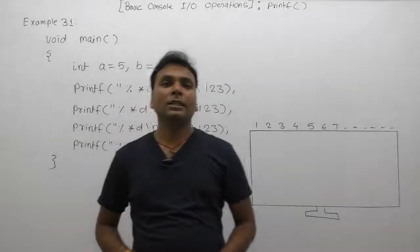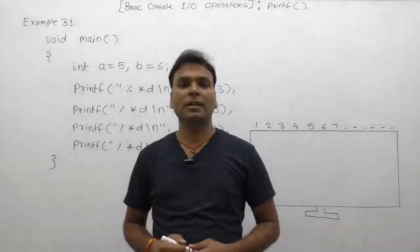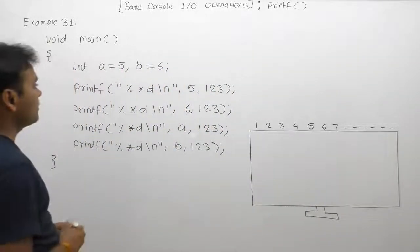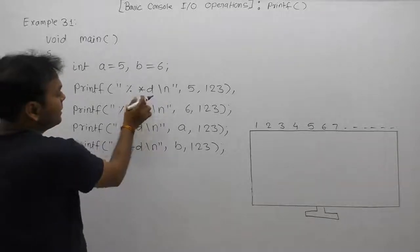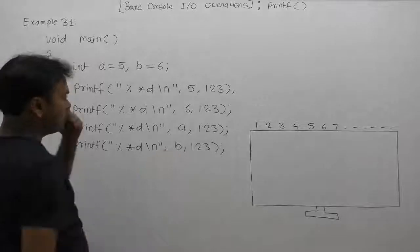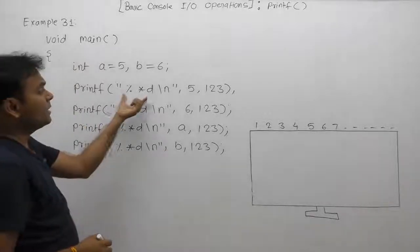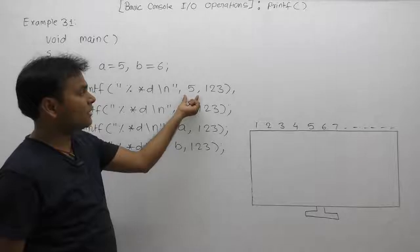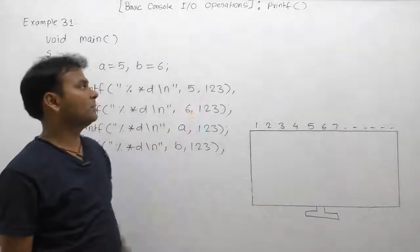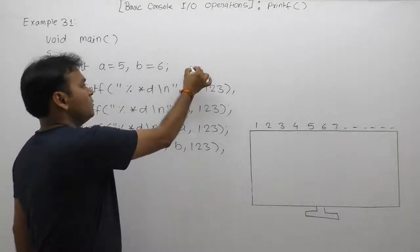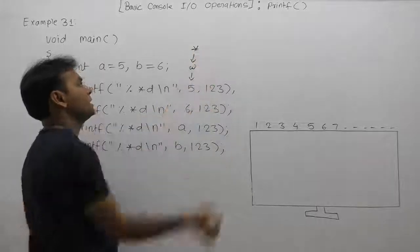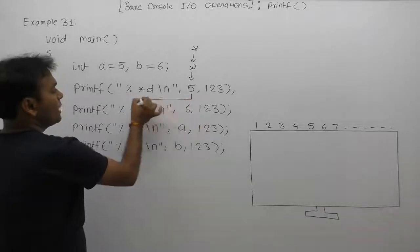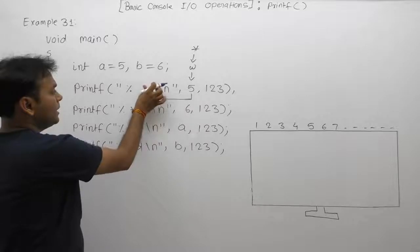Here we are using a dynamic width specifier. In the previous example we were supplying a fixed value for the width specifier, but here we are supplying dynamic values. In place of the asterisk, the first value — as seen in previous cases — according to %d of the first format specifier, the first format specifier is replaced by the first argument value. But here %d is not replaced by 5; it is simply the width value which is replaced in place of the asterisk. So 5 will be replacing the asterisk.